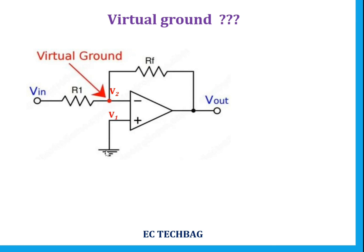V1 is directly connected to ground, so its potential is 0. And V2, which is approximately equal to V1, also has a potential of approximately 0. This is called virtual ground — this point is not directly connected with the ground, but by the virtual short concept its potential is approximately equal to 0, equal to V1. So this node is called virtual ground.